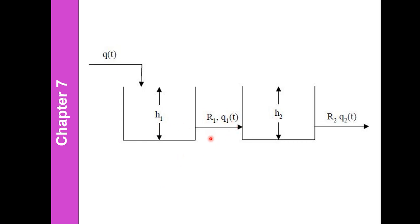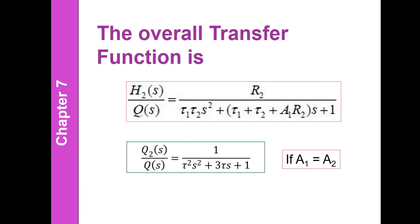Unlike a single tank where Q1 is simply H1 over R1, or even in non-interacting tanks where Q1 is still H1 over R1, only in the interacting arrangement is Q1 dependent on both levels H1 and H2. The transfer function for two interacting liquid-level tanks is second order: the denominator is tau1*tau2*s² plus (tau1 + tau2 + A1*R2)*s plus 1, making it more complicated than the non-interacting case.